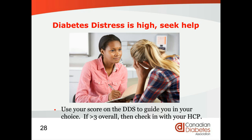Before moving on, when diabetes distress is high — particularly in the emotional area, but in all areas — use your score on the scale to guide you in your choice to seek help. If your score is three and over in particular, check in with your healthcare professional or doctor so they can help you sort out the presence of depression.